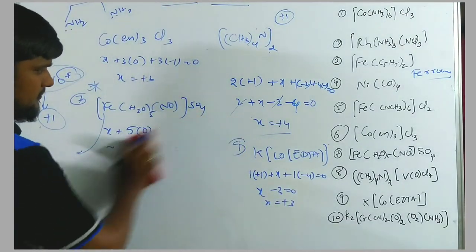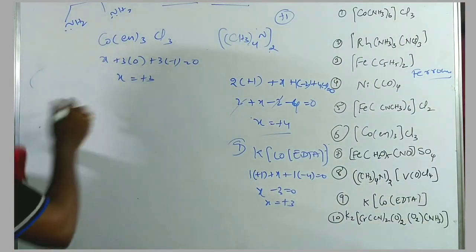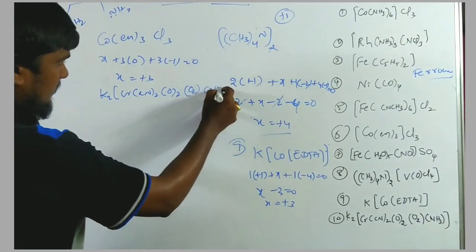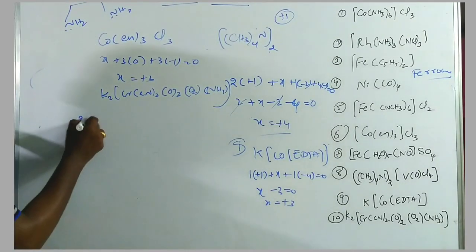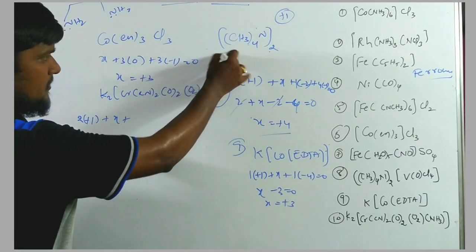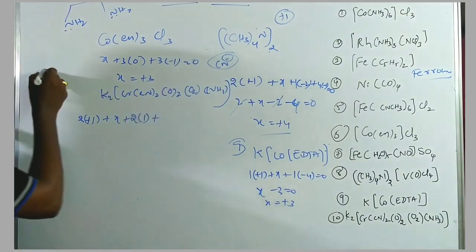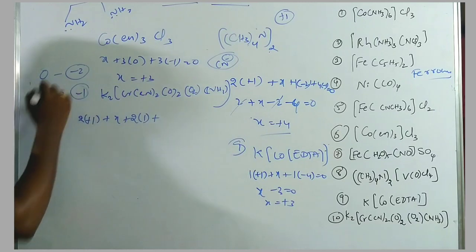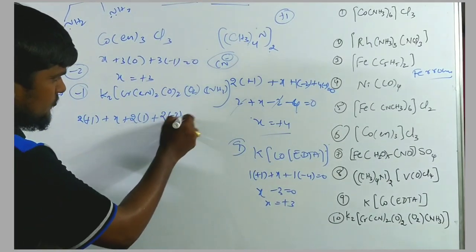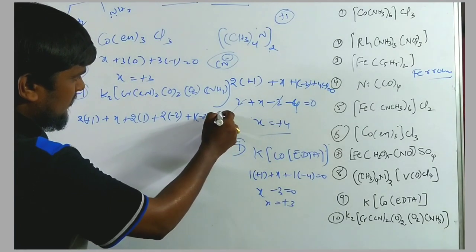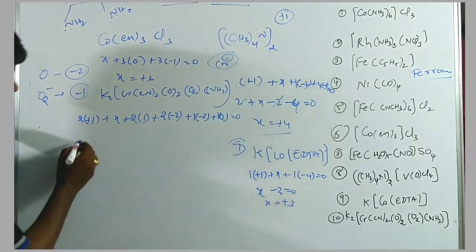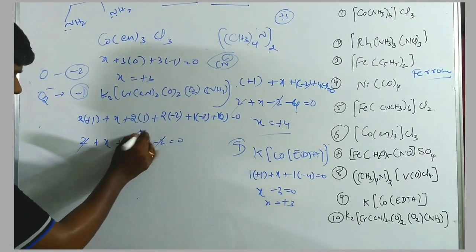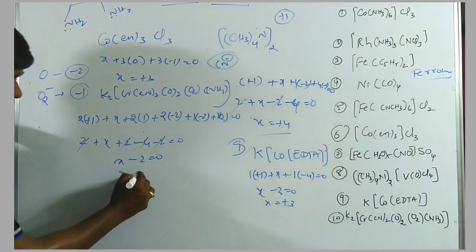Final example: K₂[Cr(CN)₂(O)(O₂)(NH₃)]. 2(+1) + X + 2(−1) + 1(−2) + 1(−1) + 1(0) = 0. CN⁻ charge is −1, OXO (O) charge is −2, O₂ (superoxo) charge is −1, NH₃ charge is 0. So: 2 + X − 2 − 2 − 1 = 0, giving X − 3 = 0 ... correcting the arithmetic: 2 + X − 2 − 4 − 2 = 0, X = +2. The oxidation state of chromium is +2.